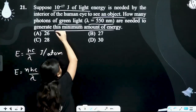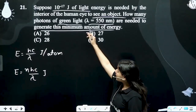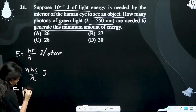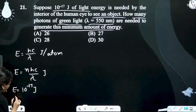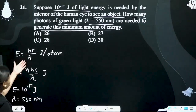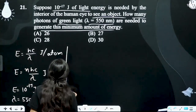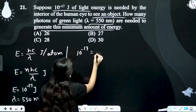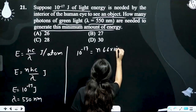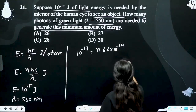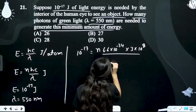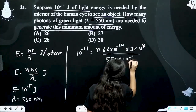Aur hum kitni wavelength ki light incident karwa rahe hain — green light karwa rahe hain, lambda is 550 nanometer. Toh N into 6.6 into 10 to the power minus 34, into 3 into 10 to the power 8, upon 550 into 10 to the power minus 9.